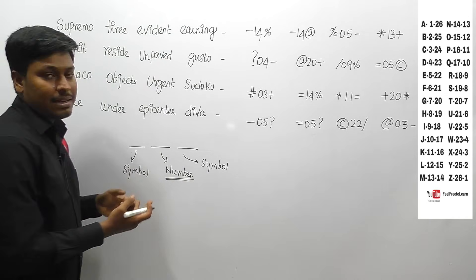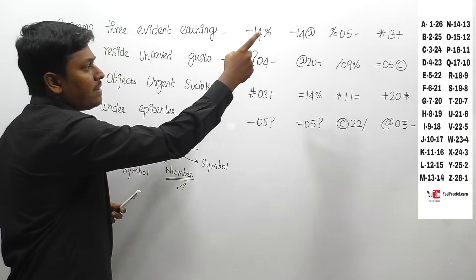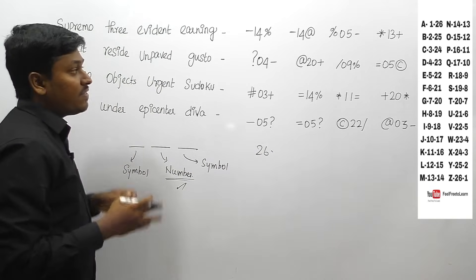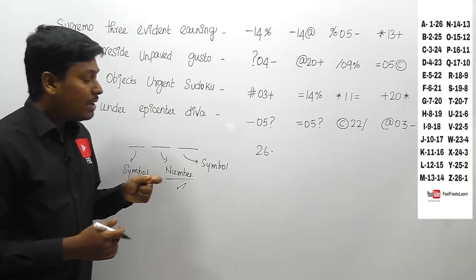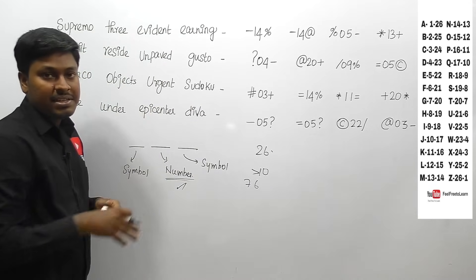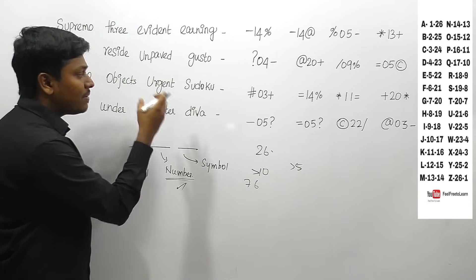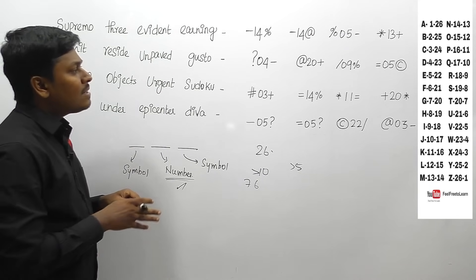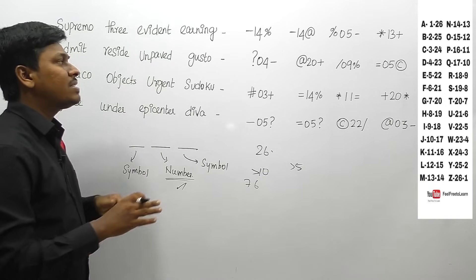My advice is to concentrate initially on symbols or either numbers. I concentrate only on the numbers. Have a glance at the numbers: 14, 14, 5, 13, 20, and 14, 20, 22. All numbers are less than 26, so they will use either alphabetical order or reverse alphabetical order. If numbers are less than 10 — like 7, 6, 5 — I concentrate on the number of letters in each word. If all numbers are below 5, I concentrate on vowels and consonants.